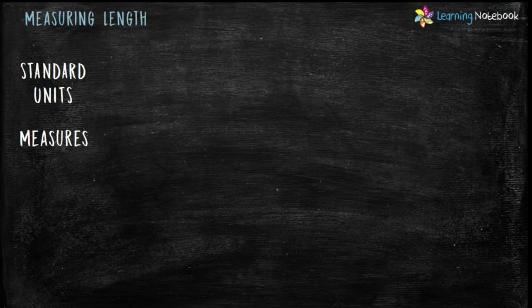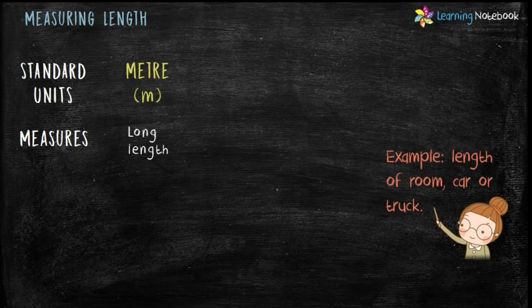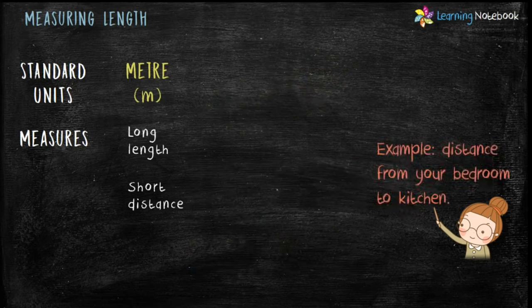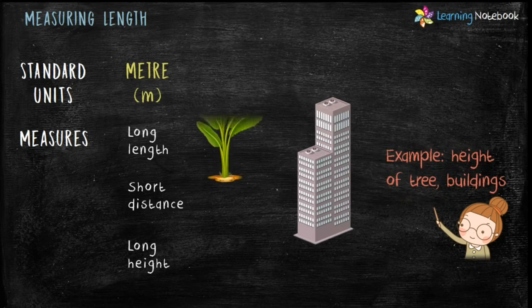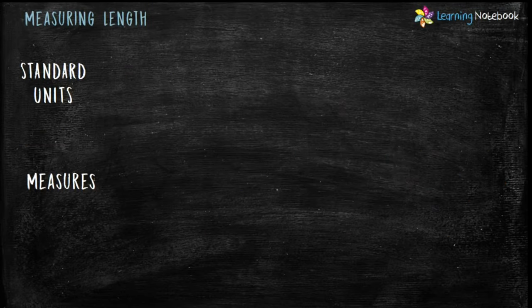The next standard unit to measure length is meter. In short, meter is written as m. We use meter to measure long length, like length of a room, length of a car, or length of a truck. Meter is also used to measure short distance — for example, distance from your bedroom to kitchen is measured in meter. We also use meter to measure long height — for example, height of a tree or height of buildings.